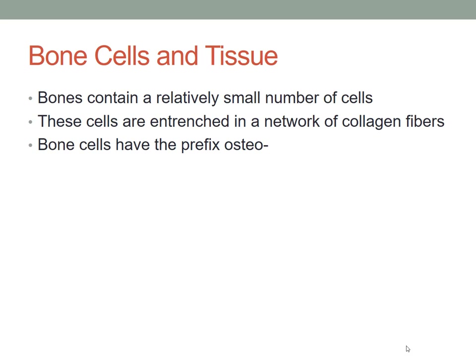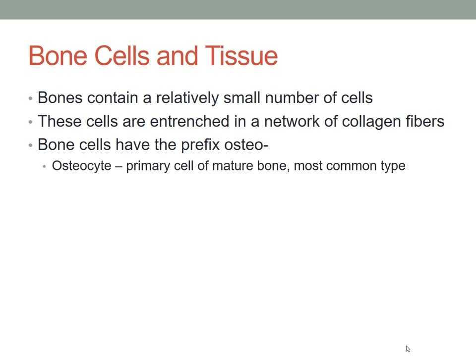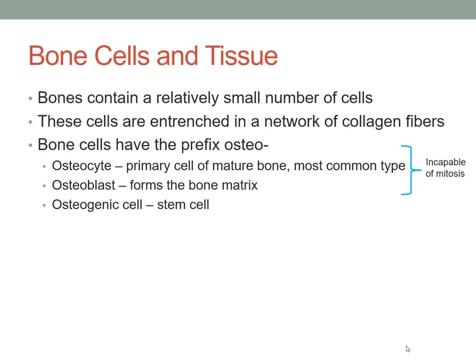Bones contain a relatively small number of cells, entrenched in a network of collagen fibers. Bone cells have the prefix 'osteo.' The osteocyte is the primary cell of a mature bone and the most common type of bone cell, although there are others. The osteoblast forms the bone matrix. These two cells are incapable of going through mitosis, so the stem cell — the osteogenic cell — is how new bone cells are actually formed. And then you have the osteoclast, which resorbs bone.